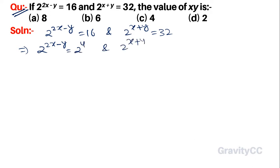And 2^(x+y) = 32 = 2^5. Since the bases are the same, we get 2x - y = 4 (equation 1) and x + y = 5 (equation 2).